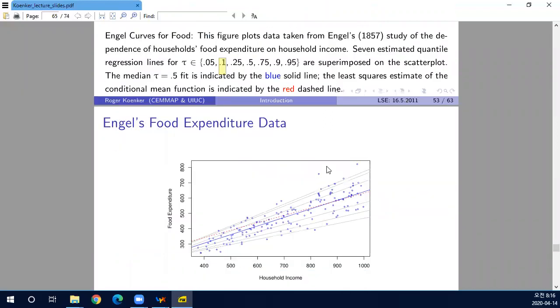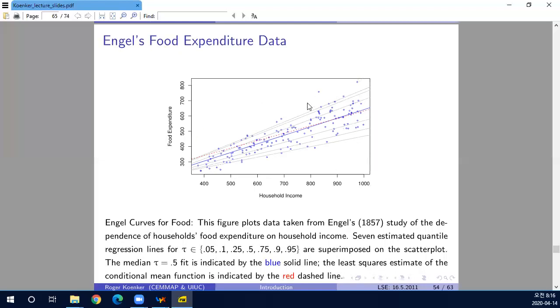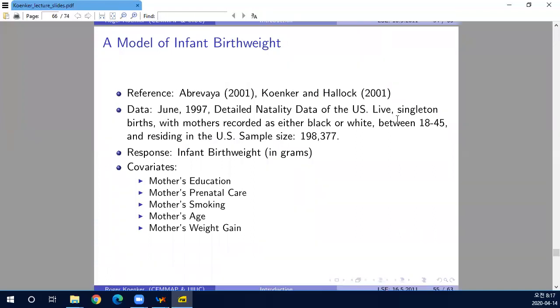It looks at this area only, household income below 1000. Then still the pattern is similar. 90 percent, 95 percent is close, but 5 percent, 10 percent are a little bit more far from each other.